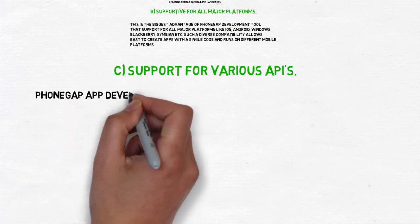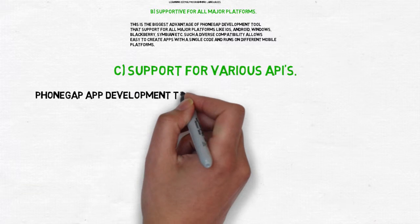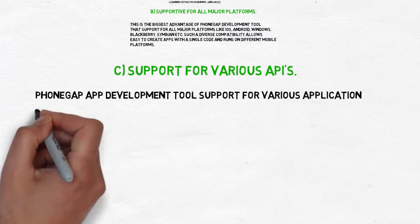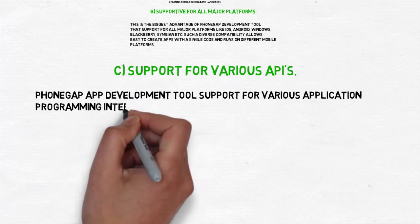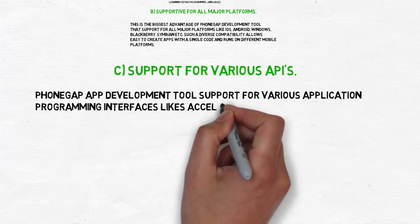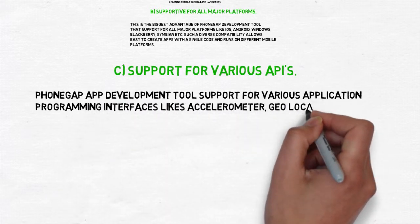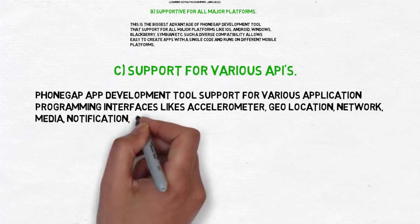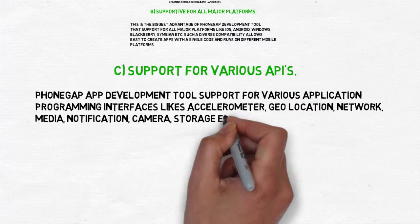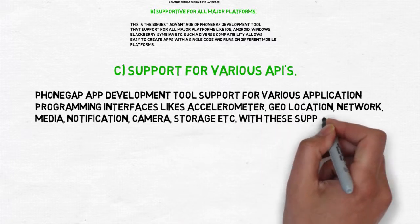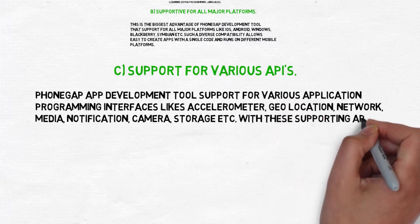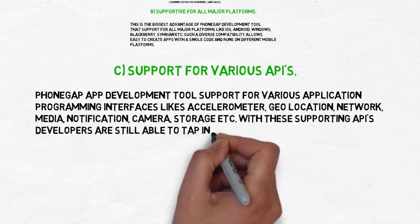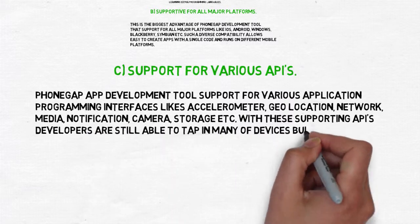PhoneGap app development tools support various application programming interfaces like accelerometer, geolocation, network, media, notification, camera, storage, and more. With these supporting APIs, developers are still able to tap into many of the devices' built-in features.